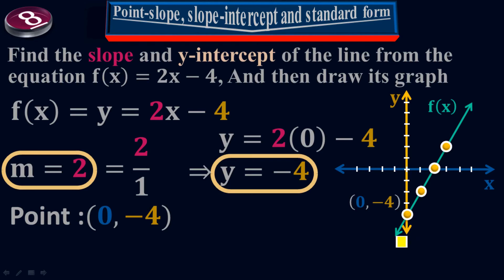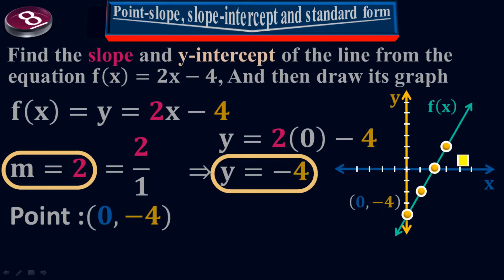This line crosses the y-axis at negative 4, which is the y-intercept. So we got all three parameters: slope of the line, which is m equals 2; y-intercept, which is negative 4; and the graph of the line. Three things were asked — slope, y-intercept, and the graph — and we have found all three.